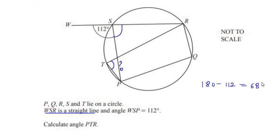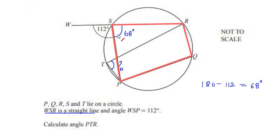We can find this angle by subtracting 112 degrees from 180 degrees, so we get 68 degrees. Now we can see that there are two quadrilaterals present inside the circle. Let me mark out the first quadrilateral: it is S, R, Q, P — and this is called a cyclic quadrilateral because all four vertices of this quadrilateral are on the circle.